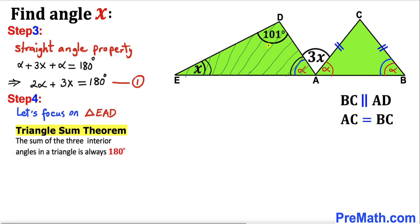Therefore, I can write angle x plus angle alpha plus this angle 101 degrees must be 180 degrees. Let's subtract 101 degrees from both sides, so x plus alpha equals 79 degrees.